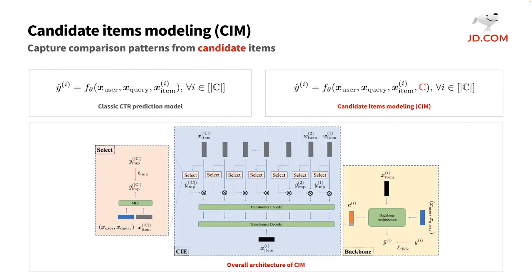We propose Candidate Items Modeling, CRM, a CTR prediction framework to capture comparison patterns from candidate items. Formally speaking, a classical CTR prediction model takes features on user, query, and target item as input and outputs the predicted CTR. Based on this, our proposed CRM framework additionally takes a set of candidate items as another input, which is used to capture implicit comparison patterns within user awareness.